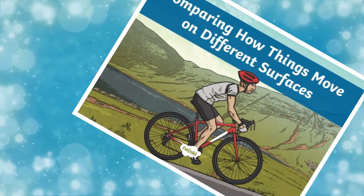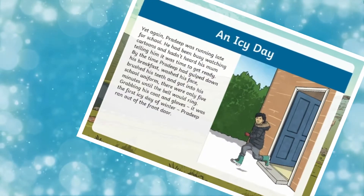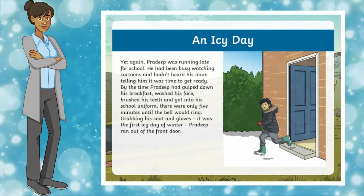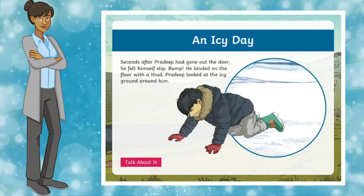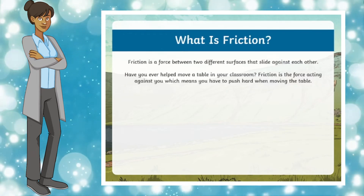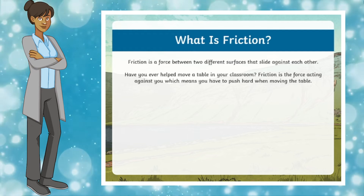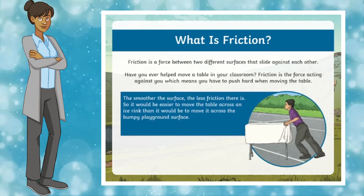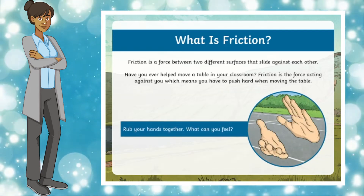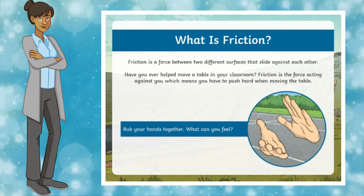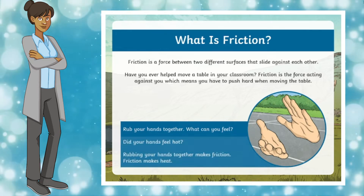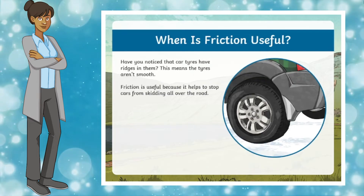If you're looking for a helpful resource to support teaching your Key Stage 2 pupils all about friction and how to experiment with friction in real life, then this brilliant 'Comparing How Things Move on Different Surfaces' PowerPoint is just what you need. It covers the Year 3 Forces and Magnets National Curriculum objective: compare how things move on different surfaces.